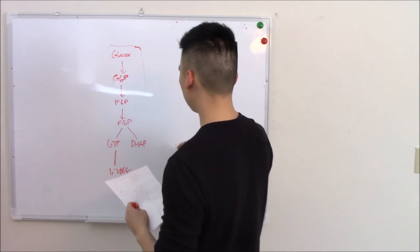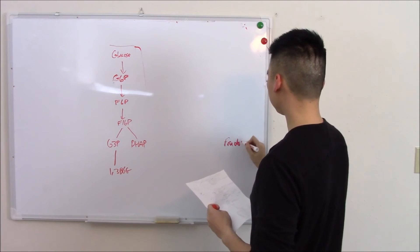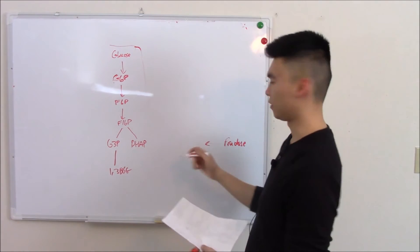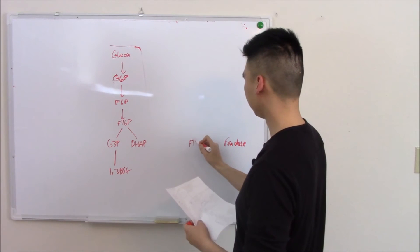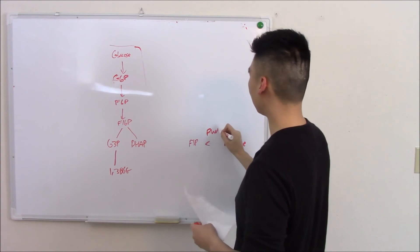The pathway, very, very similar. Fructose comes in, gets phosphorylated to fructose 1-phosphate via fructokinase. Hopefully these are starting to make more sense to you.